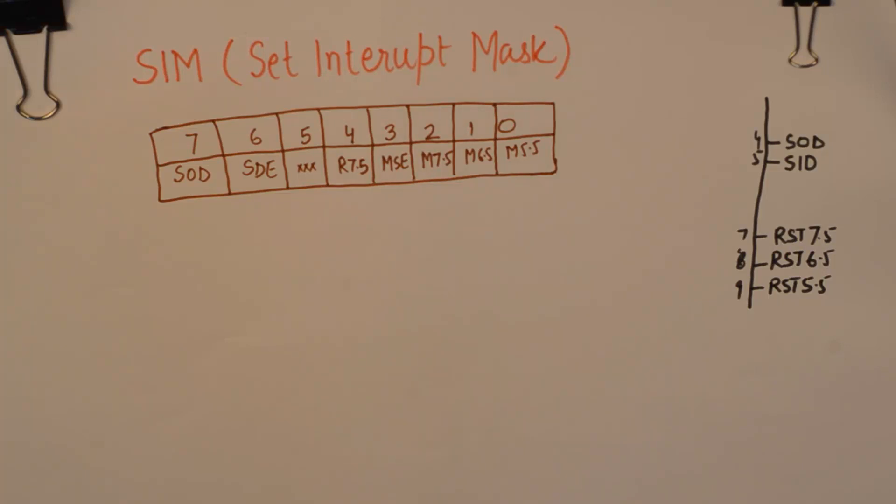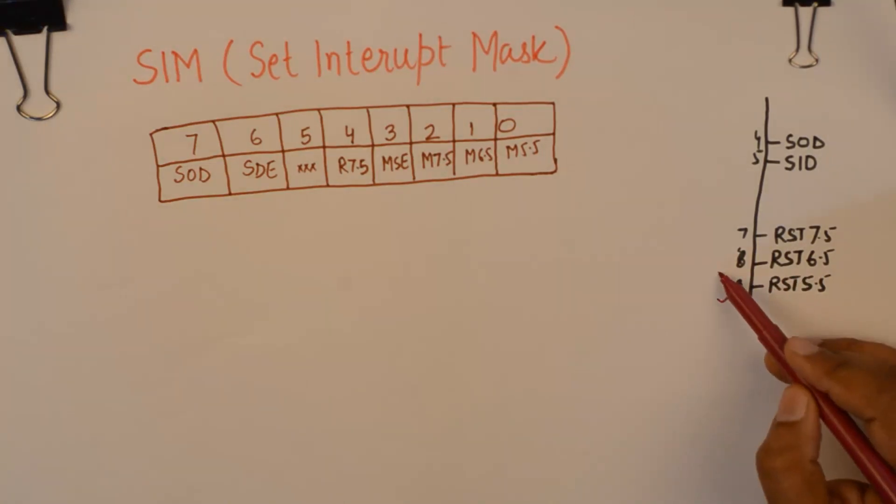When we talk about maskable interrupt, TRAP is an NMI non-maskable interrupt. So we are going to be talking about RST 5.5, 6.5 and 7.5.